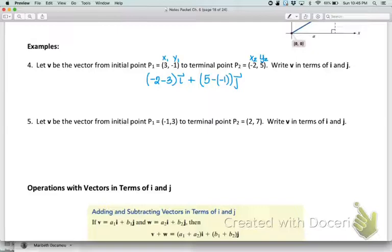Now we just need to combine those values. -2 minus 3 gives me -5i, and then 5 minus -1 is going to make this positive 6j. If you do those in reverse, you're going to get a positive 5 and a negative 6, which is going to point your vector in the opposite direction. So we want to make sure we don't do that. We said this is vector v, so let's give it its name.